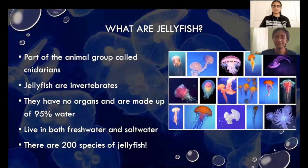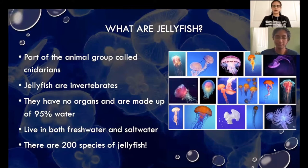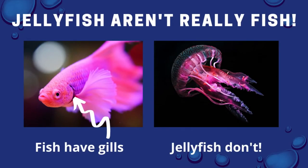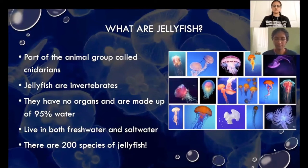Now before we dive into the life cycle of a jellyfish, let's look at what a jellyfish actually is. A jellyfish is an animal, but despite their name it's not actually a fish. Unlike fish, they have no gills but instead they absorb oxygen through their skin. Jellyfish are actually a part of the animal group called cnidarians. Jellyfish are also invertebrates because they don't have backbones. They also don't have organs and are made up of 95 percent water.